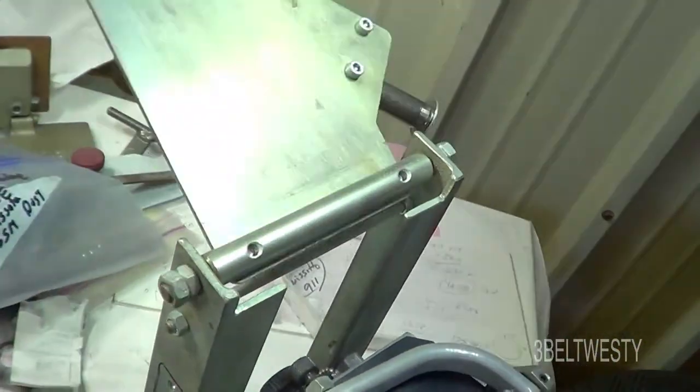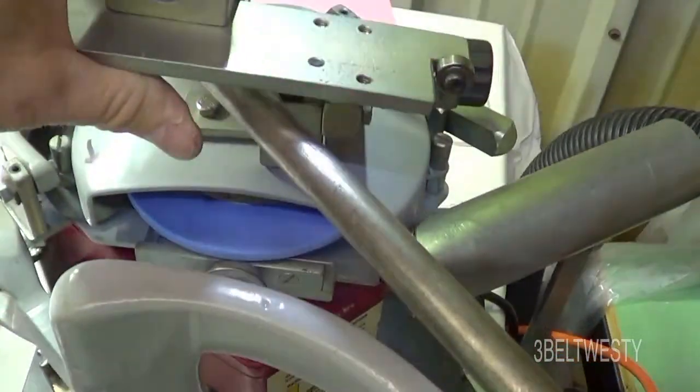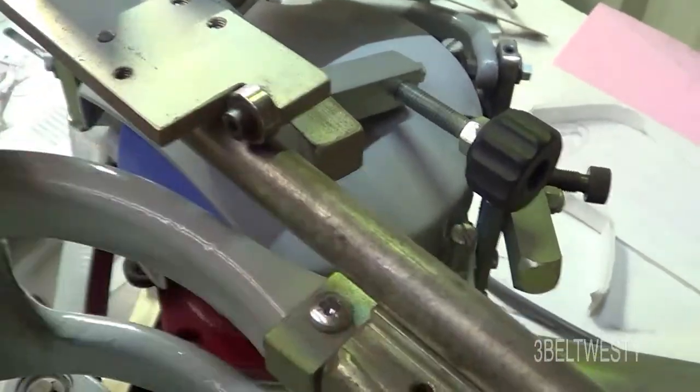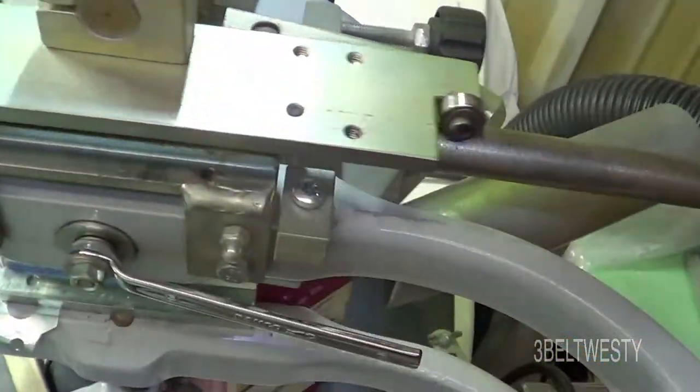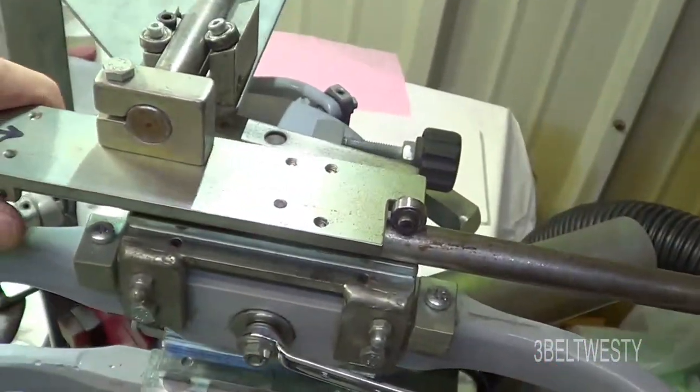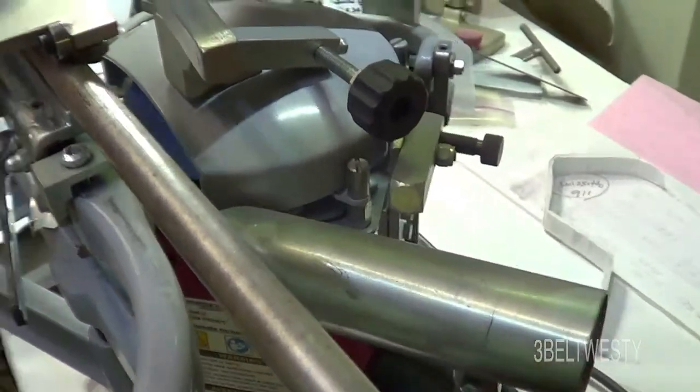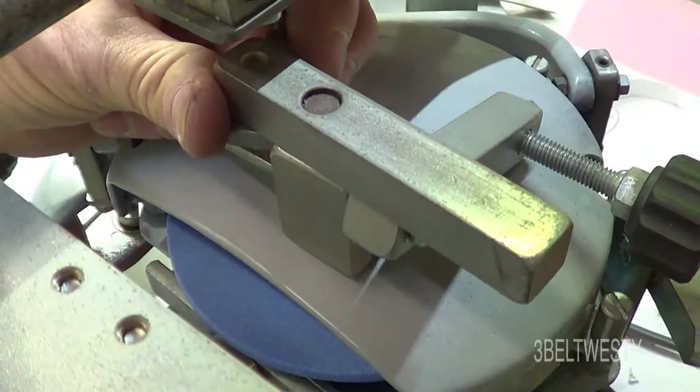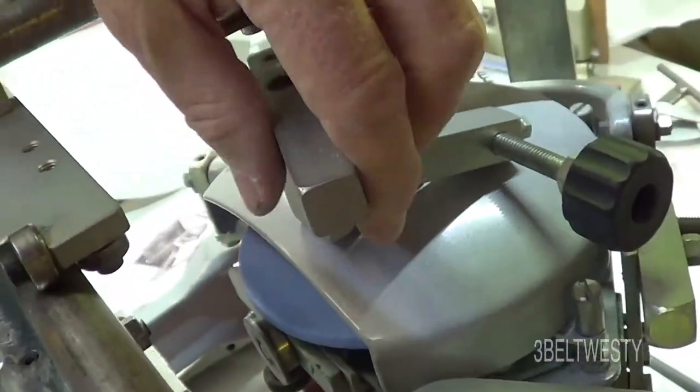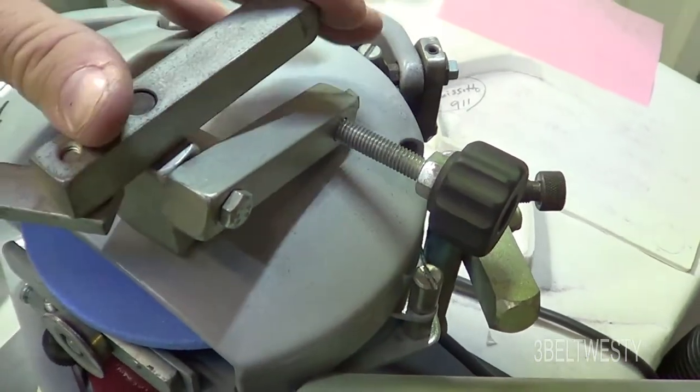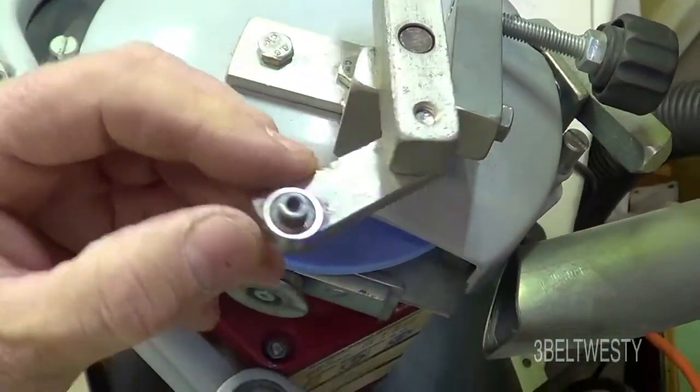This whole thing here flips over, and this rod here runs through here like this. This goes back and forth, this rides on here, and there's a roller here that you swing around. I'll just pick it up and put it on. This roller here is what touches the template.